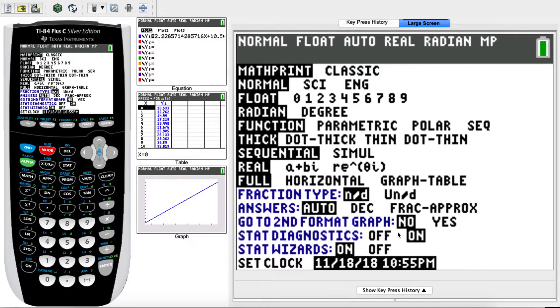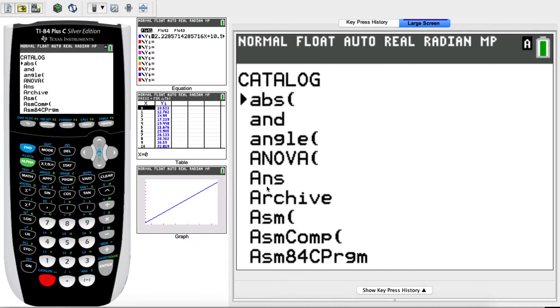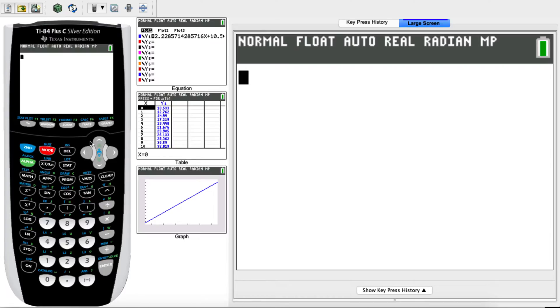You just go to mode and then where it says stat diagnostics, just make sure that it's on. If you can't find it here, then you can press on second and then catalog. And then scroll down until you find diagnostic on, press enter and then enter again, make sure that it says done. So you only need to do this once, you don't have to do it again, just to make sure that your R value will show up.